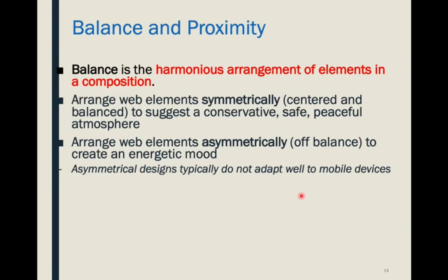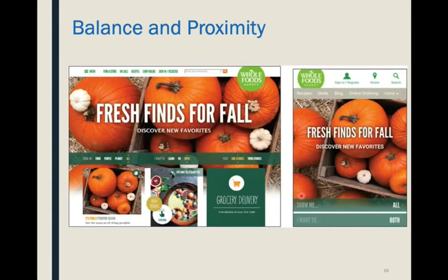That imbalance allows the eye a sort of freedom and creates movement. It is important to know that asymmetrical designs on the web don't apply themselves that well to RWD — responsive web design principles. Here's a great example on the Whole Foods website — it's got a little bit of both symmetry and asymmetry. This text here is symmetrical, centered, and this is a large centered image. But we have this great asymmetrical balance that allows for movement. The Whole Foods logo is quite large and draws our attention as a focal point.